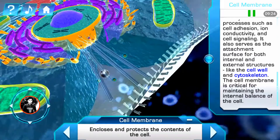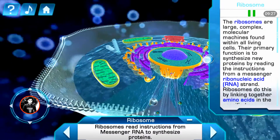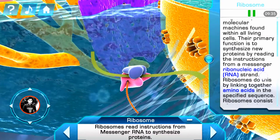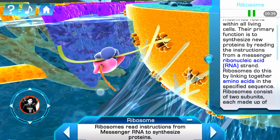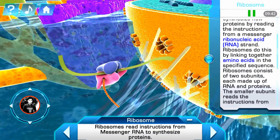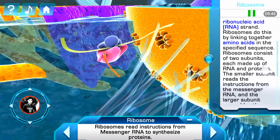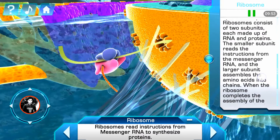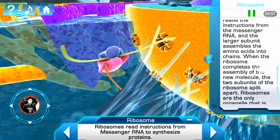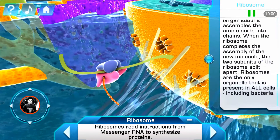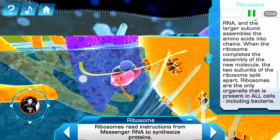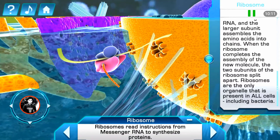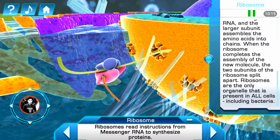The ribosomes are large, complex molecular machines found within all living cells. Their primary function is to synthesize new proteins by reading the instructions from a messenger RNA strand. Ribosomes do this by linking together amino acids in the specified sequence. Ribosomes consist of two subunits, each made up of ribonucleic acid (RNA) and proteins. The smaller subunit reads the instructions from the messenger RNA, and the larger subunit assembles the amino acids into chains. When the ribosome completes assembly, the two subunits split apart. Ribosomes are the only organelle present in all cells, including bacteria.